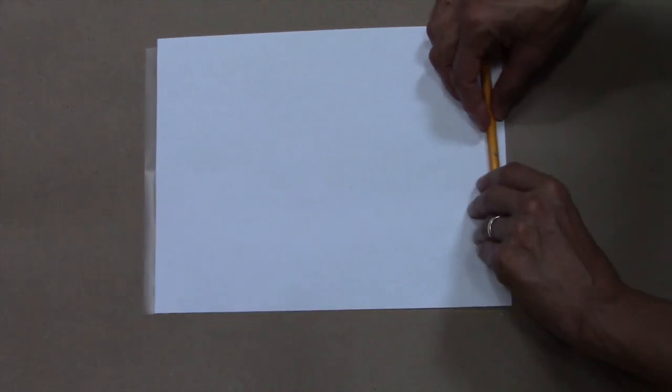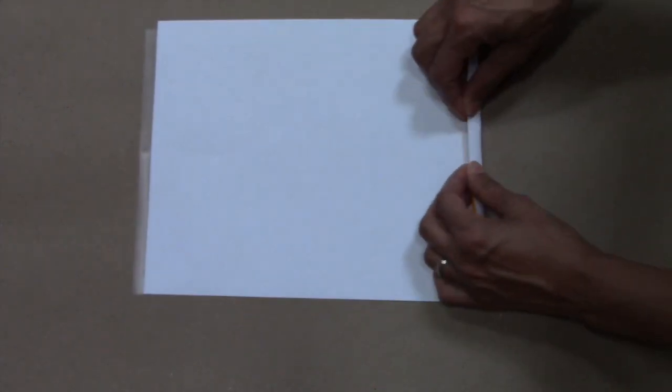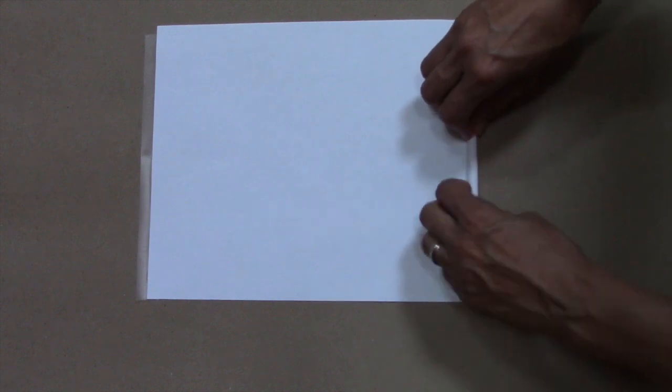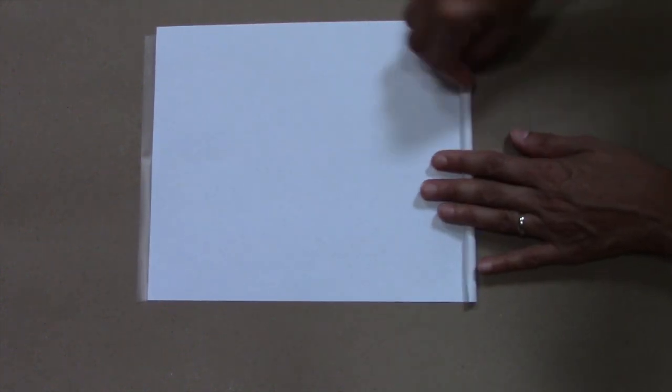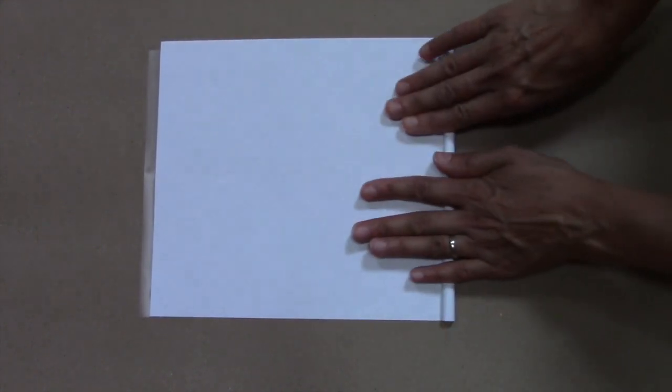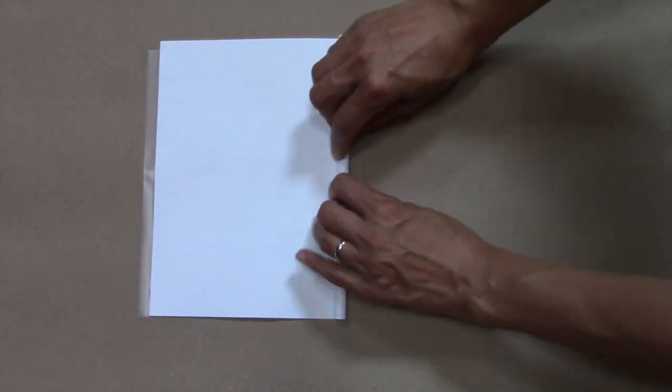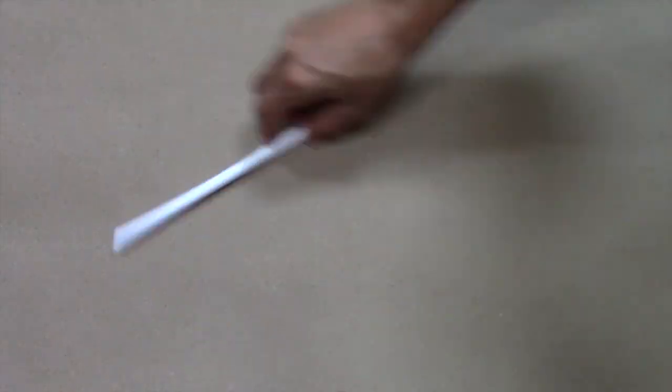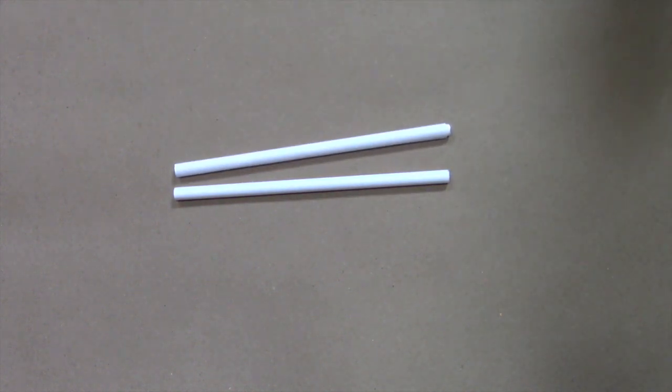Start by applying a piece of clear tape along one of the short edges of an 8.5 by 11 sheet of paper. Then center the pencil on the opposite edge and carefully roll the paper around the pencil. When you get to the end, press the tape to seal the edge. You'll need four of these.